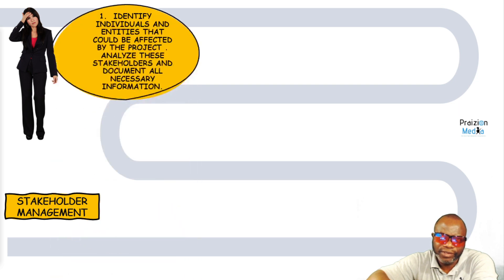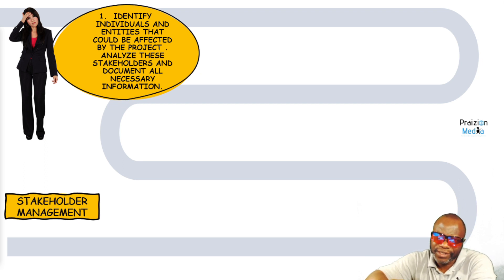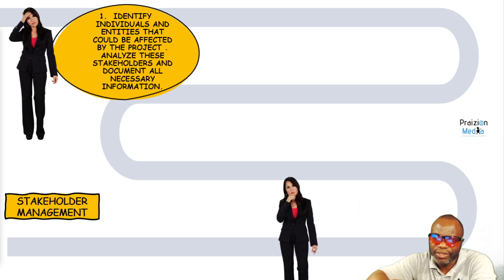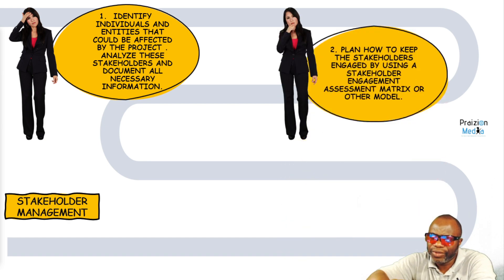The very first thing is to identify stakeholders — you want to identify those individuals and entities that could be affected by the project, analyze these stakeholders, and document all necessary information.